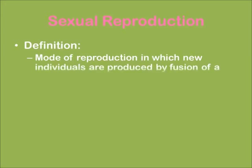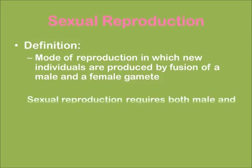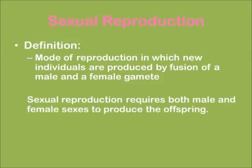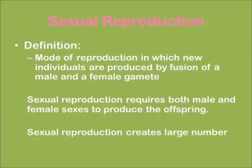Sexual reproduction is a mode of reproduction in which new individuals are produced by fusion of a male and a female gamete. Sexual reproduction requires both male and female sexes to produce the offspring, and it creates a large number of variations.